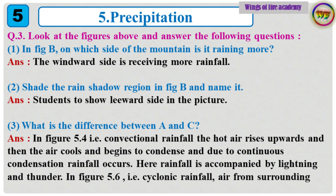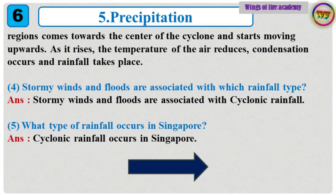3. What is the difference between A and C? In figure 5.4 (convectional rainfall), the hot air rises upwards, then the air cools and begins to condense, and due to continuous condensation rainfall occurs. Here rainfall is accompanied by lightning and thunder. In figure 5.6 (cyclonic rainfall), air from the surrounding rises, the temperature of the air reduces, condensation occurs and rainfall takes place.